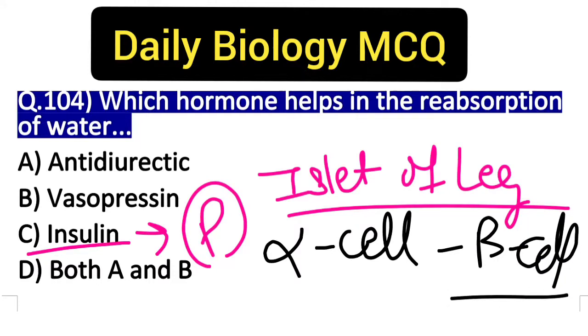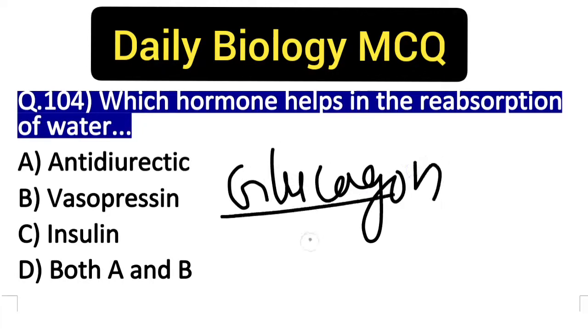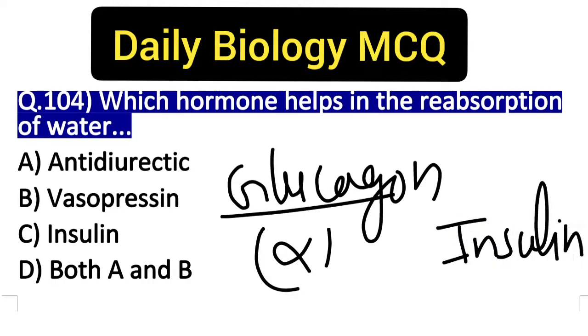Students, alpha and beta cells produce different hormones. You have to keep in mind that alpha cells produce glucagon hormone. Insulin is produced by the Islets of Langerhans beta cells.